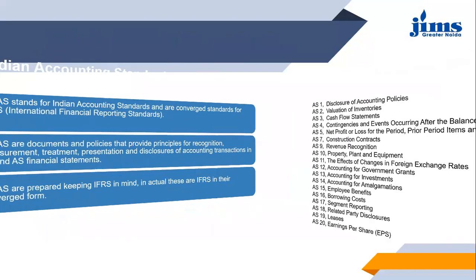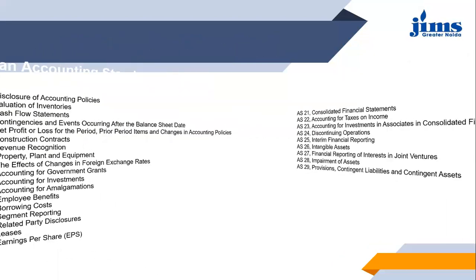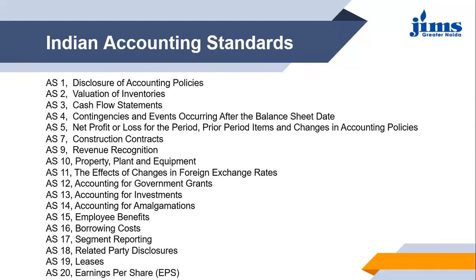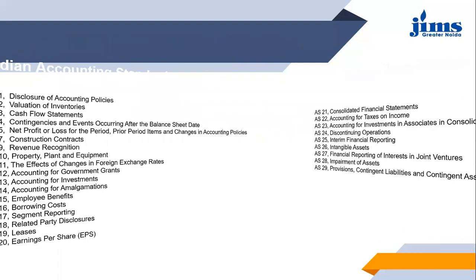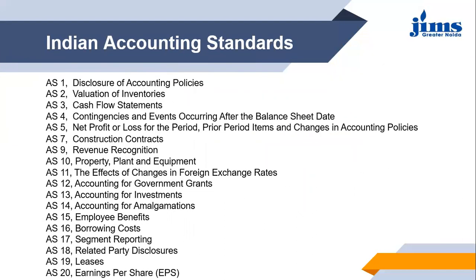Moving on to the accounting standards — these are the different accounting standards in India. We have accounting standards from AS-1 to AS-29. Accounting standard 6 and accounting standard 8 are missing here, as they were earlier in existence but have now been withdrawn by ASB. So up till now we have AS-1, AS-2, continuing till AS-29, with two standards — AS-6 and AS-8 — withdrawn from the current structure. All these accounting standards are mentioned here for further reference.